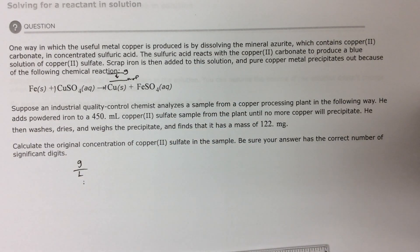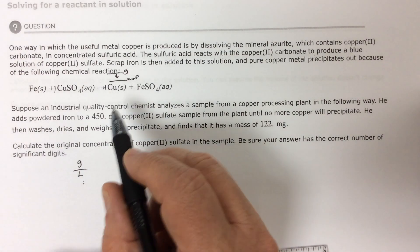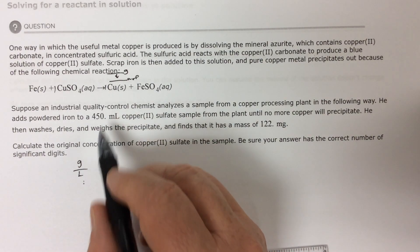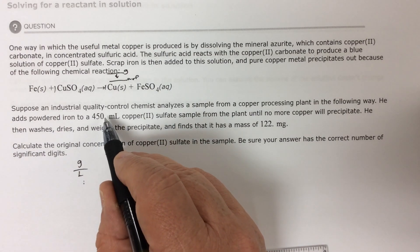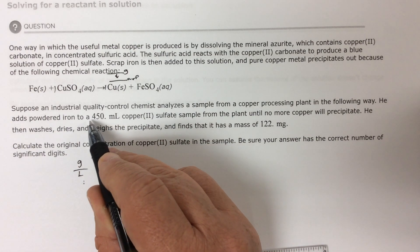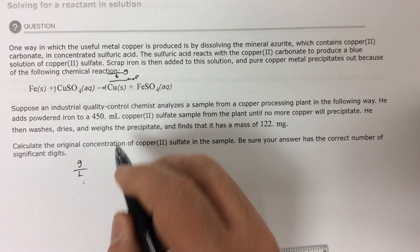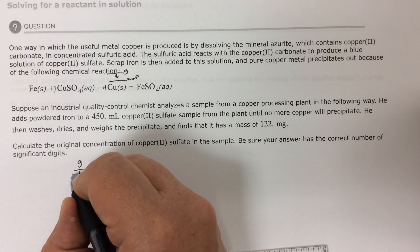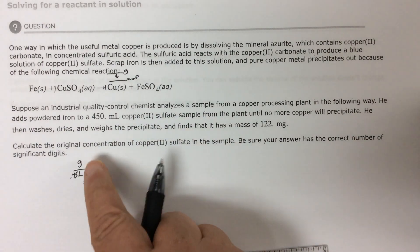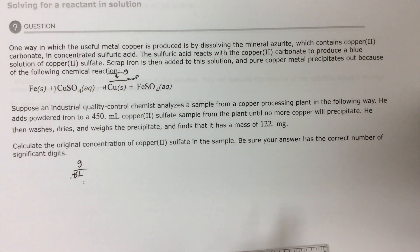All right, so first of all, what are we told? He adds powdered iron to 450 mL of copper sulfate. So that's how much we have originally. We have 450 milliliters. And if we want liters, remember, milliliters, there's a thousand. So I'm going to divide by three, divide three times. So this is 0.45 liters. I just need to know how many grams of copper sulfate to find this concentration.